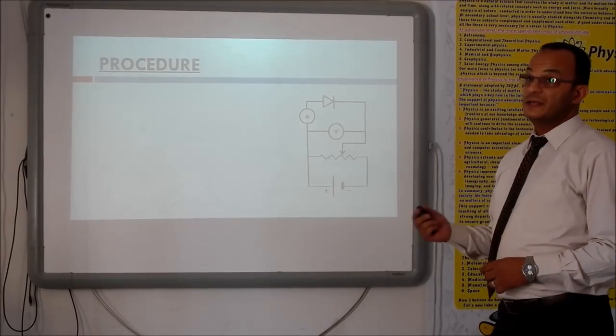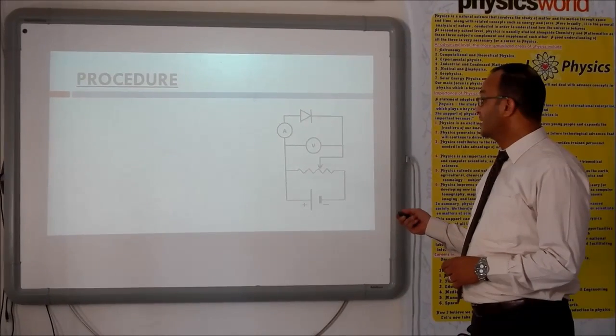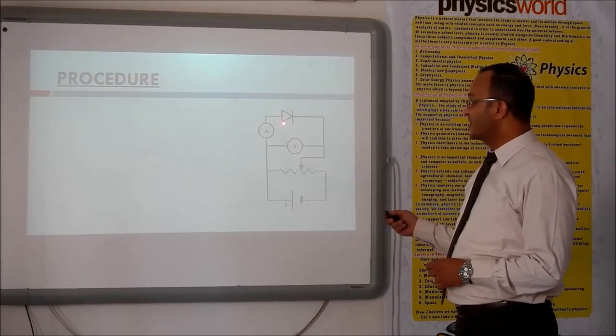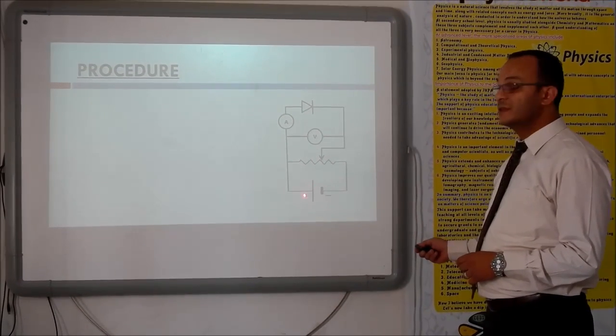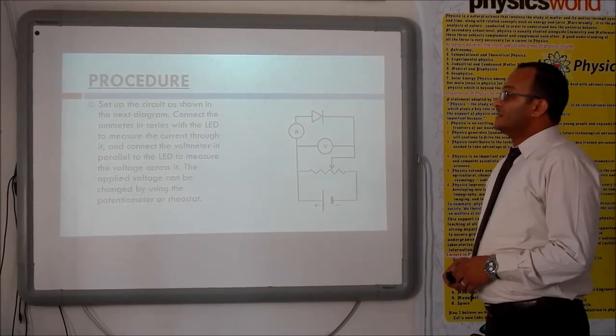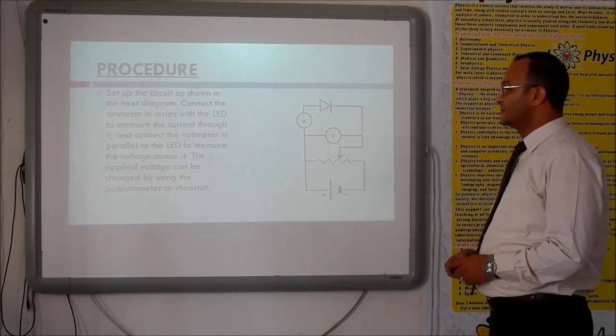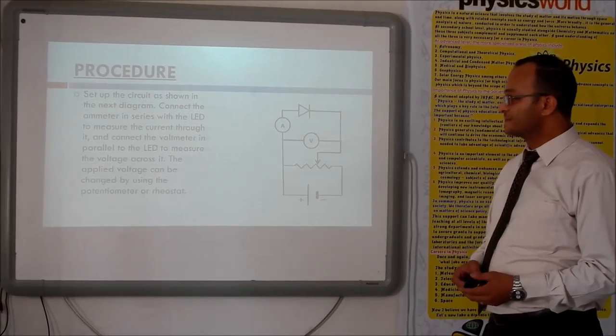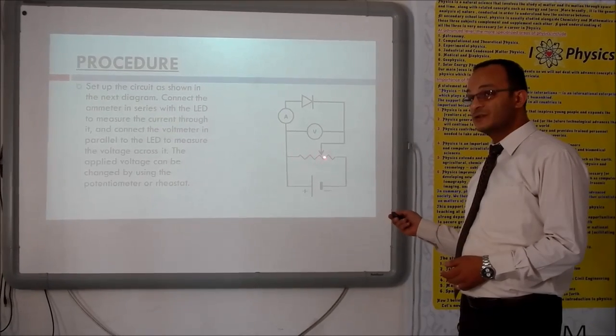Now, here we are going to start our procedure. We will connect the circuit like this: includes the LED connected in series with the ammeter and the voltmeter is connected in parallel with both of them or only the LED. Here is the potentiometer which is connected to the power source or the power supply. Set up the circuit as shown in the diagram, connecting the ammeter in series with the LED to measure the current through it and connect the voltmeter in parallel to the LED to measure the voltage across it. The applied voltage can be changed by using the potentiometer or the rheostat.